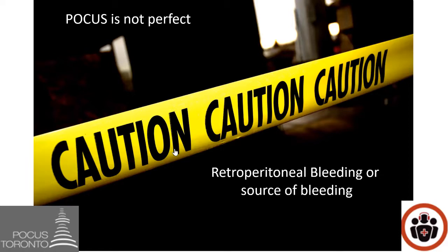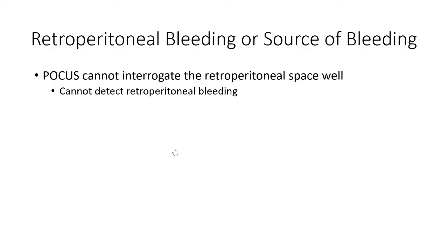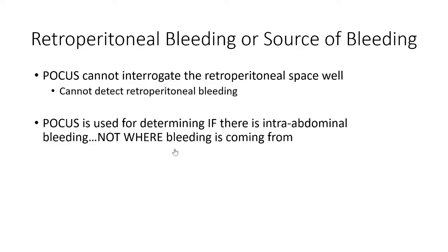Another caution: retroperitoneal bleeding will not necessarily be found on ultrasound. POCUS can't interrogate the retroperitoneal space well and won't detect retroperitoneal bleeding. So if the patient is bleeding retroperitoneally, your ultrasound of the intraperitoneal cavity would be negative. Also, POCUS is used for determining if there is intra-abdominal bleeding, not where the bleeding is coming from - it won't tell you if there's a splenic laceration, liver laceration, or bowel injury. It only tells you that the patient has bleeding in their abdomen.